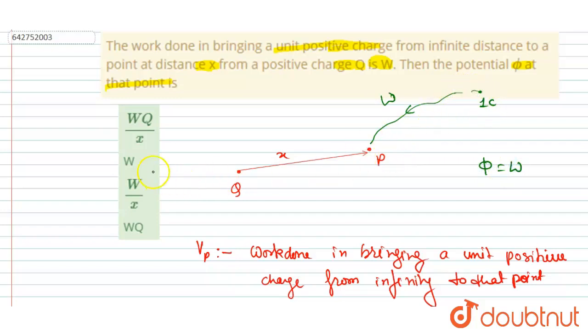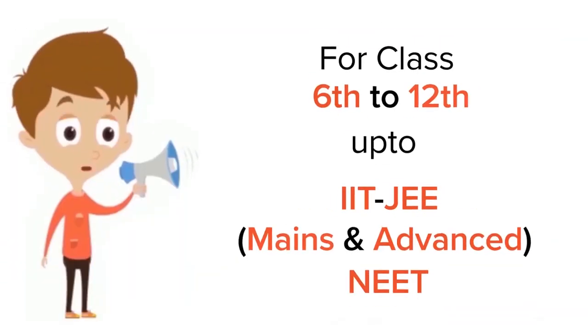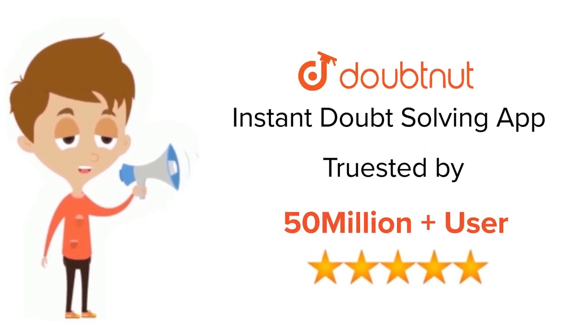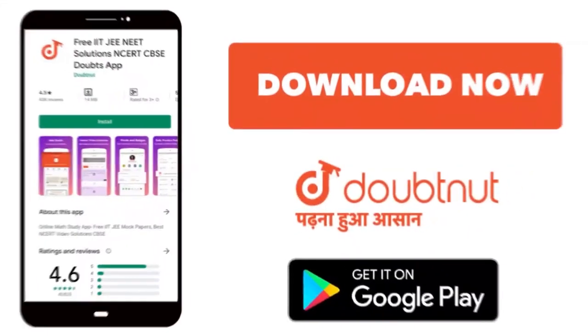infinity to this point. So I will mark B as the correct option. Thank you. For class 6-12, IIT-JEE, and NEET level, trusted by more than 5 crore students. Download Doubtnet app today.